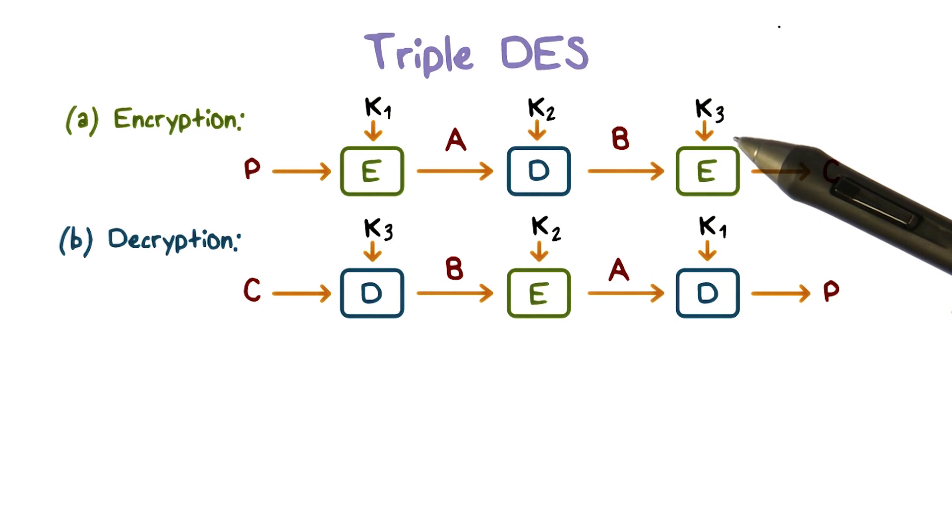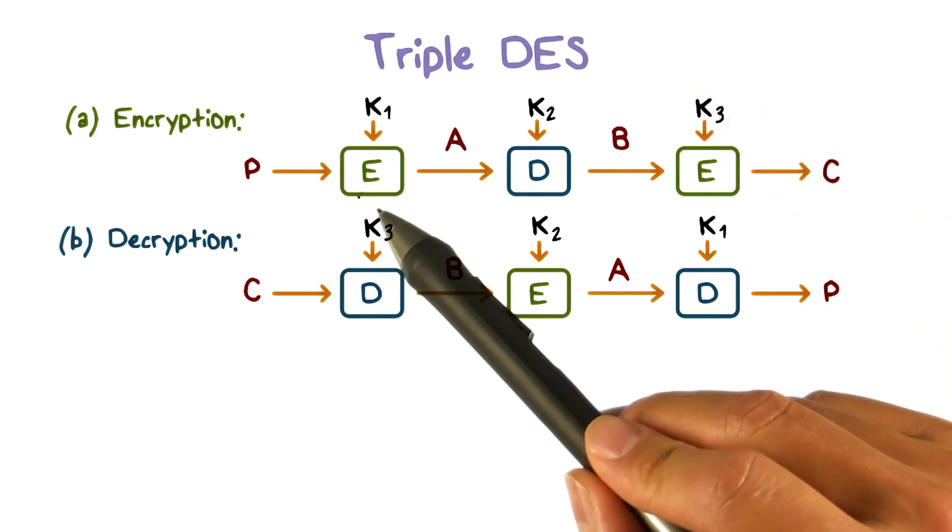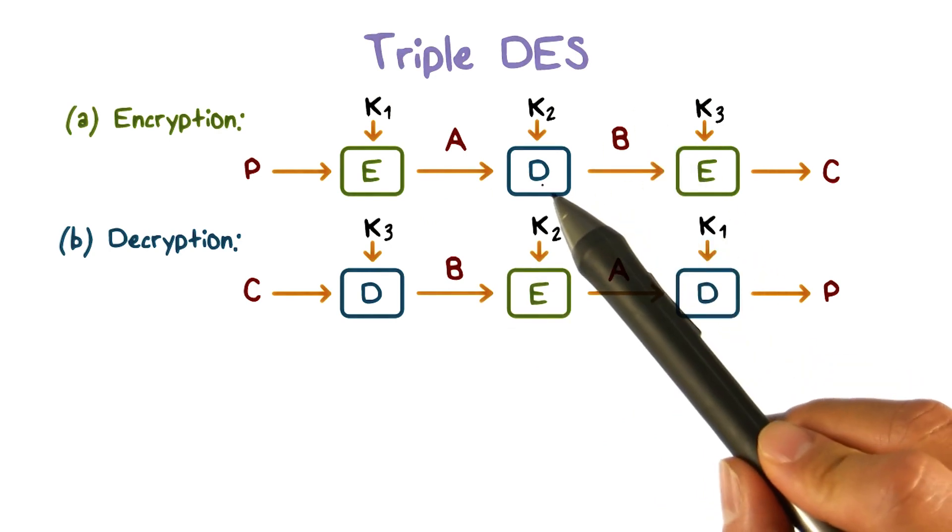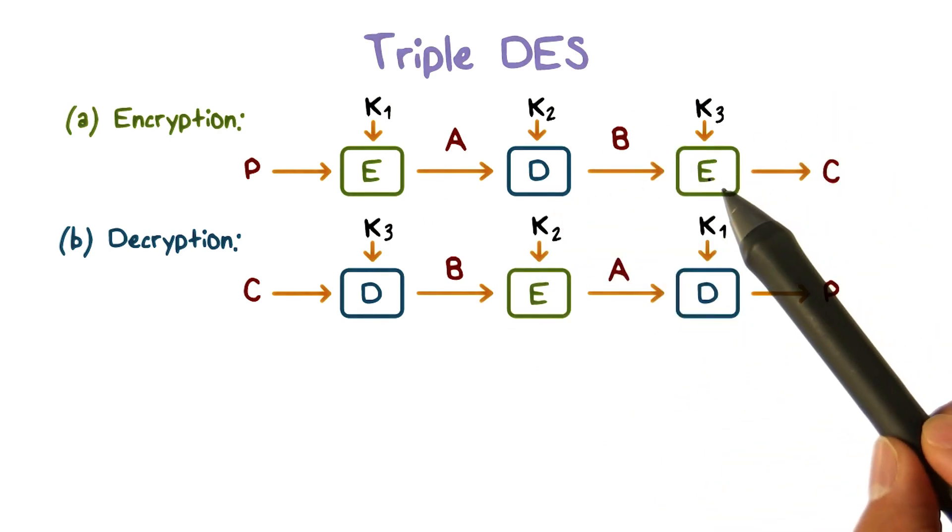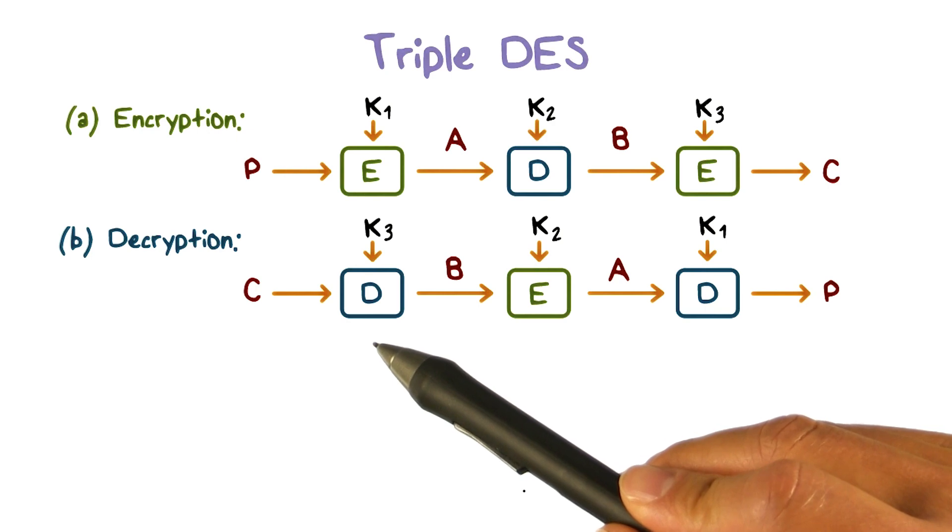The standard is to run DES three times, and this is called triple DES. The standard is to run the encryption process, then decryption process, then the encryption process again.